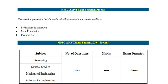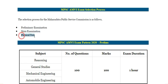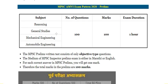This Assistant Motor Vehicle Inspector exam consists of three phases: first is the Preliminary Exam, second is the Mains Exam, and third is the Physical Test. For the Preliminary Exam we have 100 questions, 100 marks, and the exam duration is one hour. This exam has four sections: first is Reasoning, second is General Studies, third is Mechanical Engineering, and fourth is Automobile Engineering.